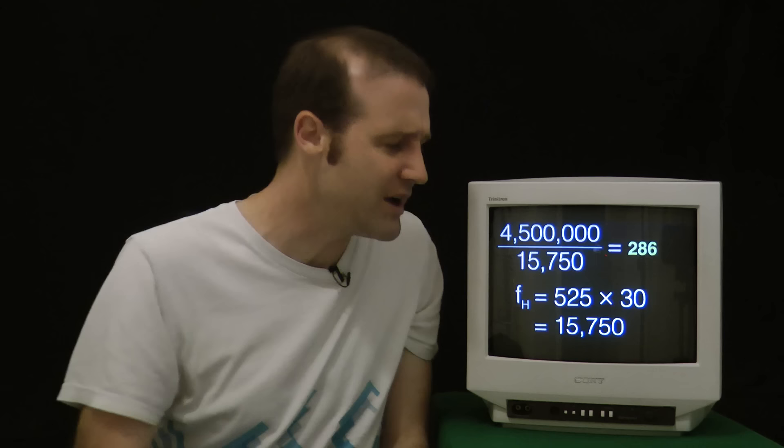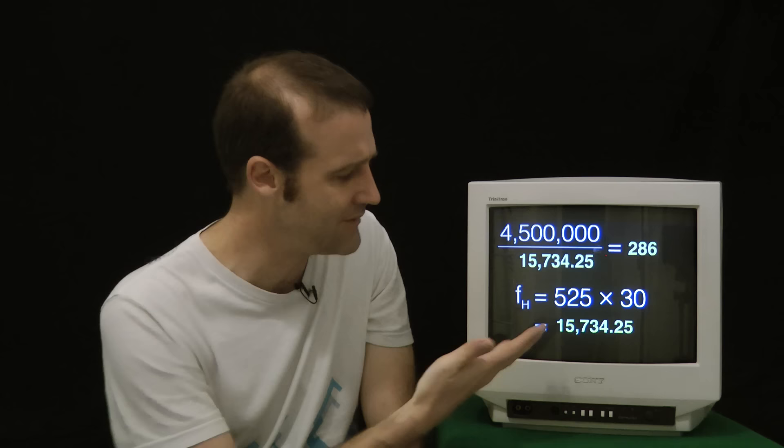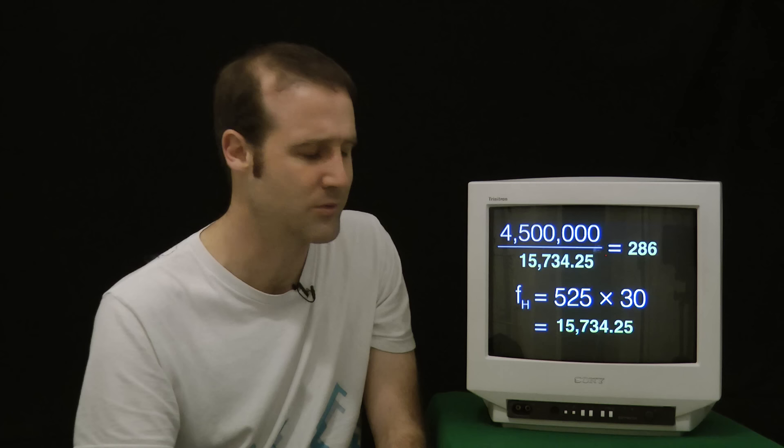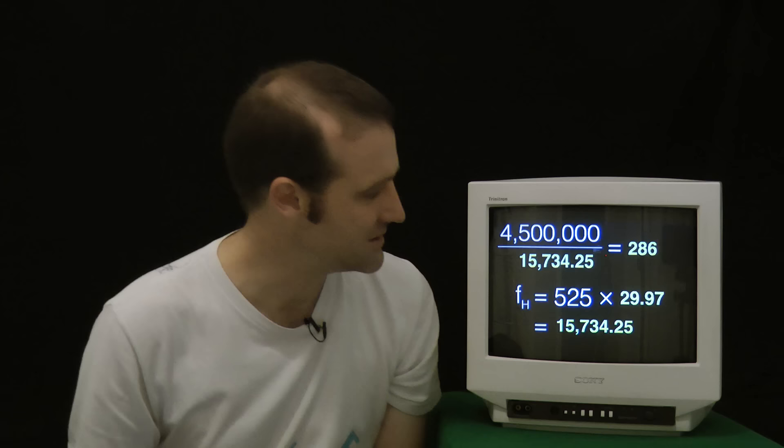For that to be 286, we would need a different horizontal frequency. In fact, we would need a horizontal frequency of 15,734.25. And we haven't, well, we would have that if instead of a 30 frame per second rate, we had a, you got it, 29.97 frames per second. And so that's what they did. They adjusted the frames per second to make this number here an integer and remove the interference between the new color signal and the old picture and sound signals.